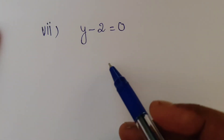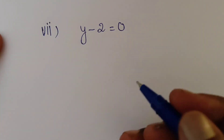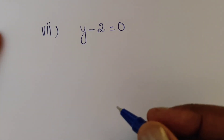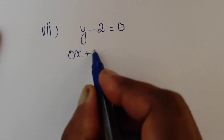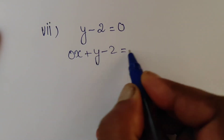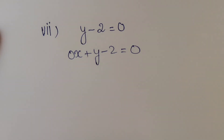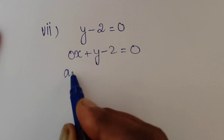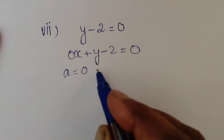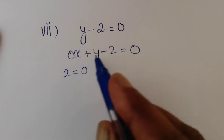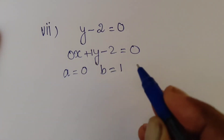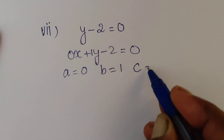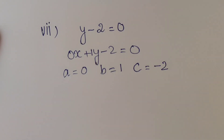Part (vii): y minus 2 equal to 0. Here there is no x variable, so we write 0x. The equation becomes 0x plus y minus 2 equal to 0. Therefore, a is equal to 0 as the coefficient of x, b is equal to 1 as the coefficient of y, and c is equal to negative 2.